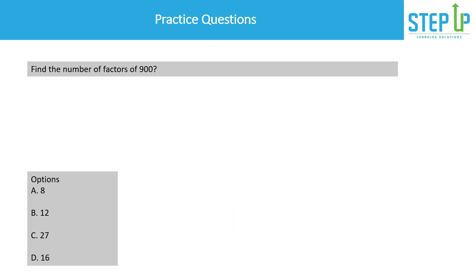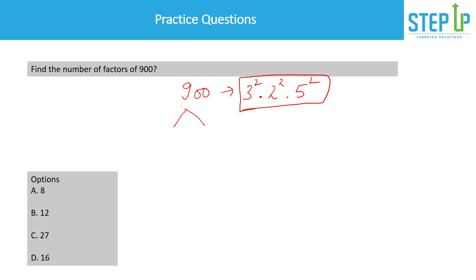Finally, let's find the number of factors of 900. Using prime factorization: 900 = 9 × 100 = 3² × (4 × 25) = 3² × 2² × 5². So this is of the form a^p × b^q × c^r. Using the formula, the number of factors = (2+1) × (2+1) × (2+1) = 3 × 3 × 3 = 27.